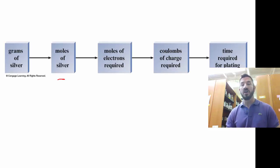For silver, one mole of silver would produce one mole of electrons. If you had aluminum, one mole of aluminum, three moles of electrons. And that's going to be an important conversion.